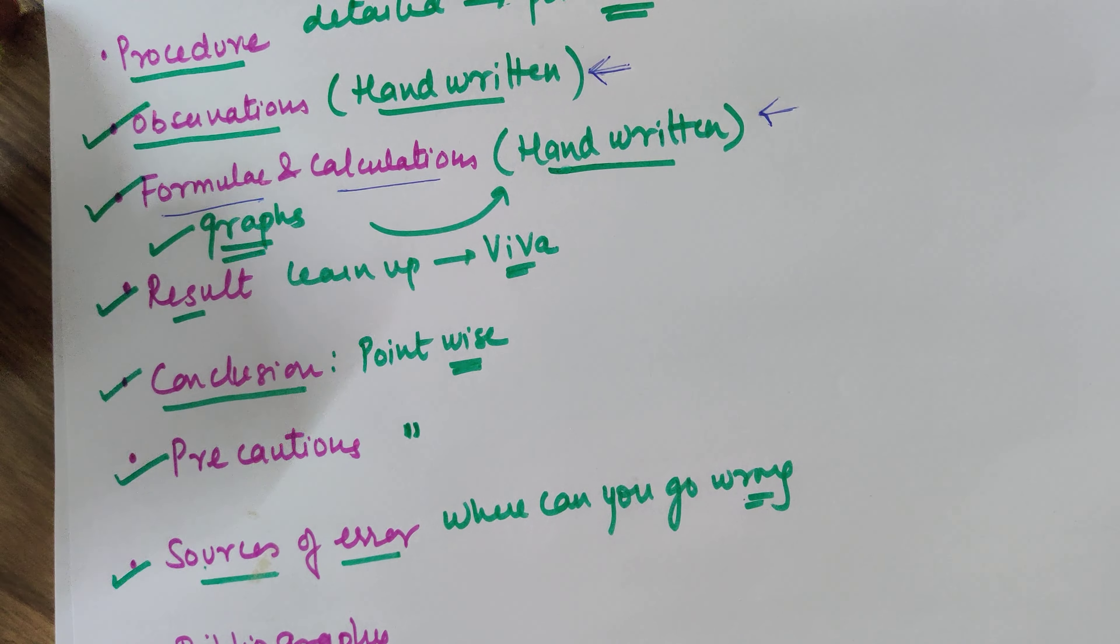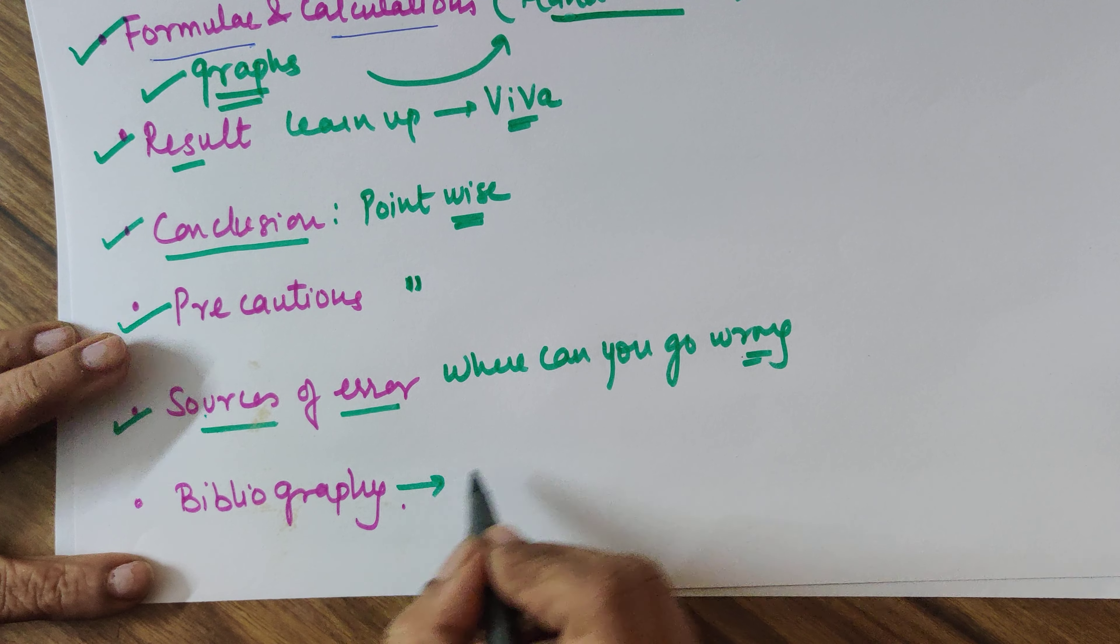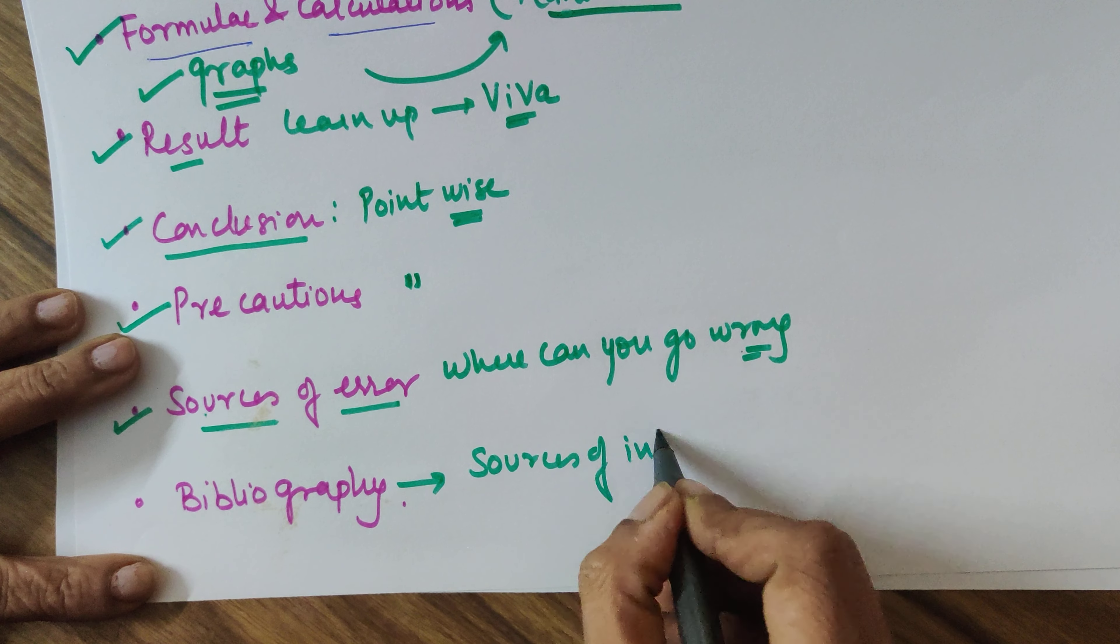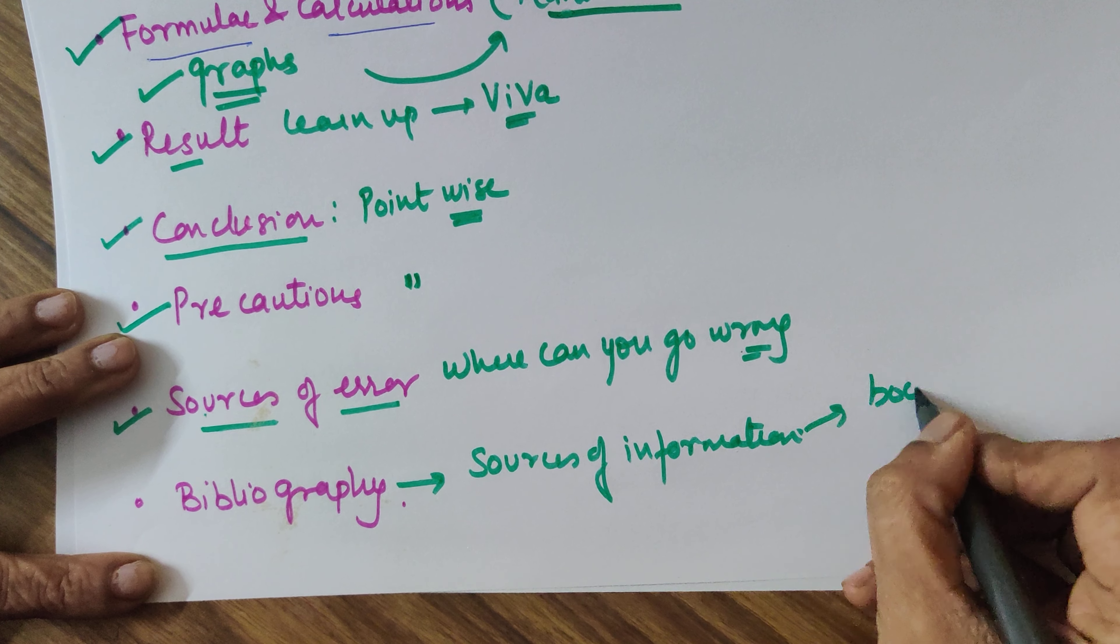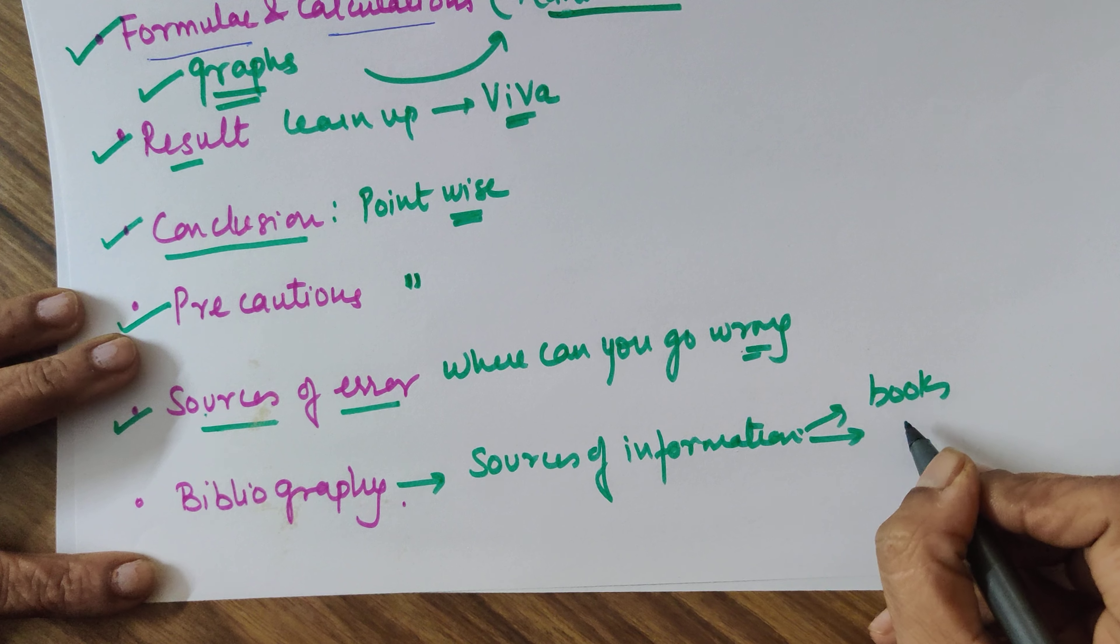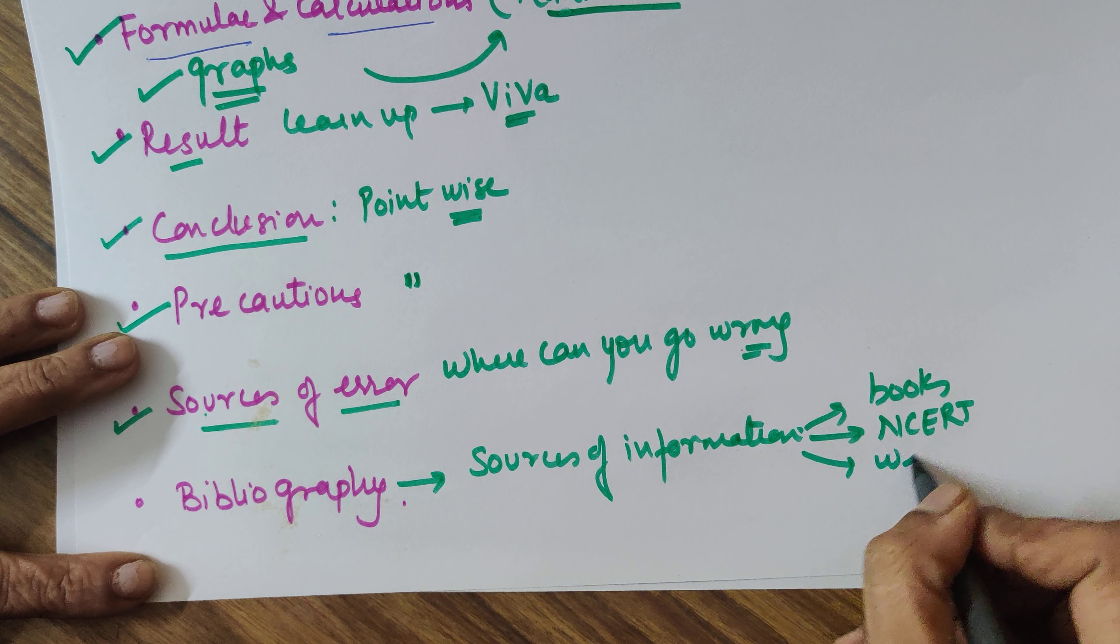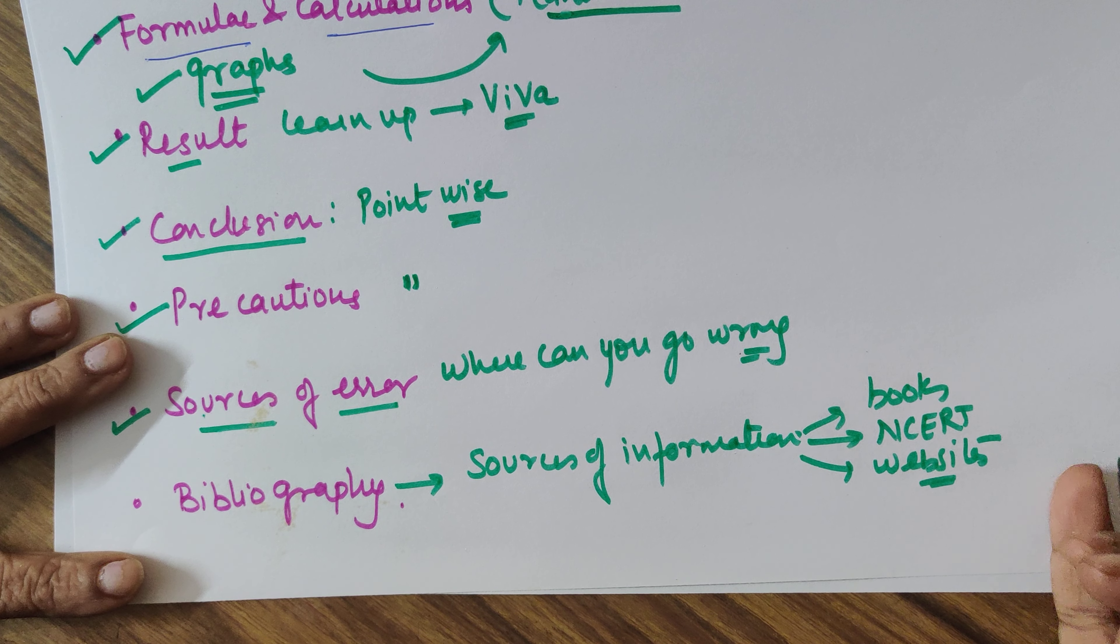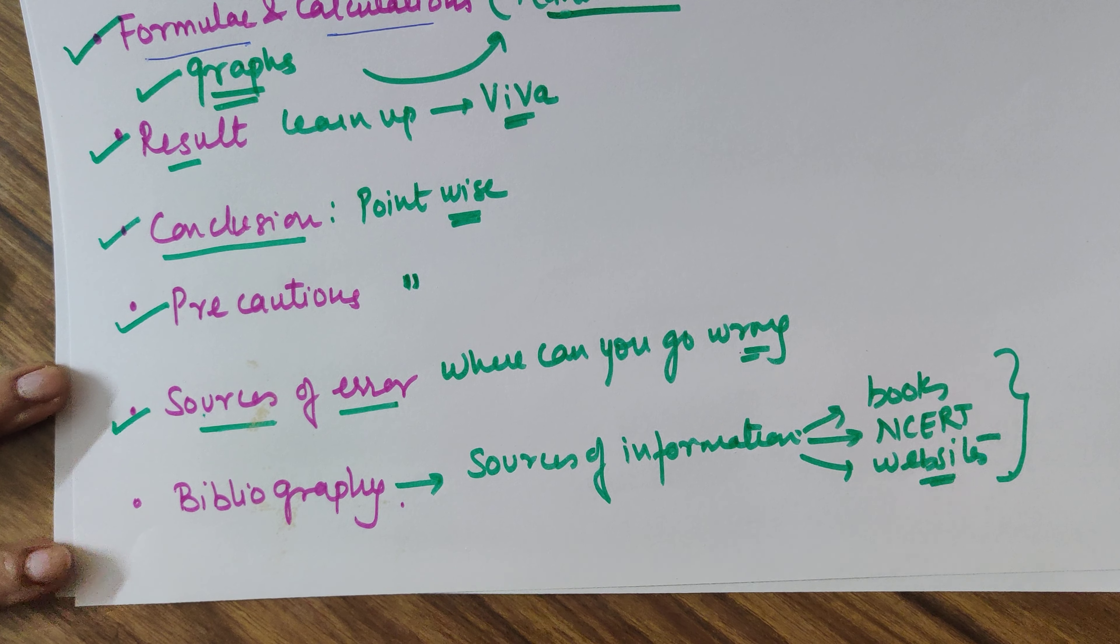The last page of your project has to be called as bibliography. Now what does that mean? This is your sources of information. Now these could be books that you need to mention, these could be NCERT, it could also be websites where you would mention that either these are the places from where you have taken up information.